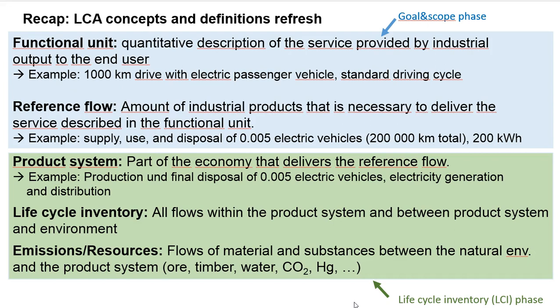So if you want to drive a thousand kilometers but the vehicle lasts 200,000 kilometers, you would take 0.005 electric vehicles — that is the translation from the functional unit to the reference flow. The product system is a constructed entity, a subsystem or fraction of the actual economy that delivers the reference flow. The life cycle inventory denotes all flows between the product system and the environment, and also within the product system. Emissions and resources are the flows that cross the boundary between the product system and the natural environment.